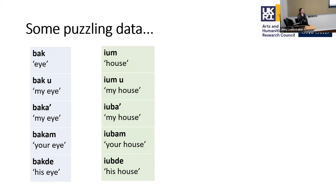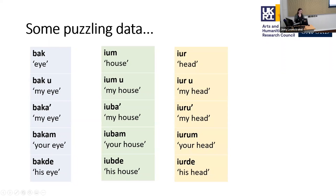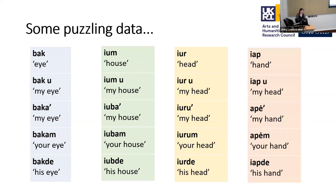Another example: yur for 'head' — yur-oo for 'my head', and with suffixes: yur-oo, yur-um, yurde — again different vowels. And then some forms that are a bit unusual: yap is 'hand', yap-oo for 'my hand', but once you use the suffix form it becomes a-bup, a-bump, yap-de. So what's going on, and how might we interpret this puzzling pattern? One thing we can do is look at the historical resources to see how possession was marked.